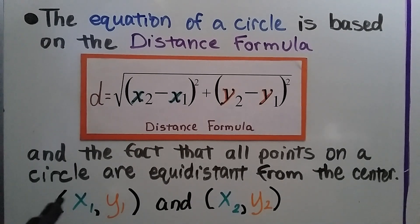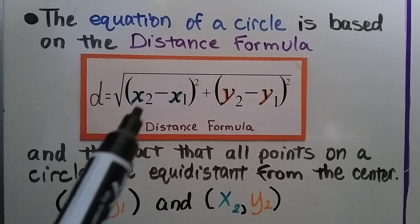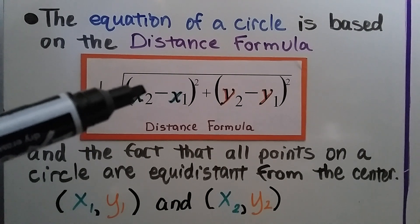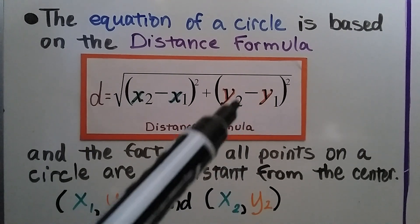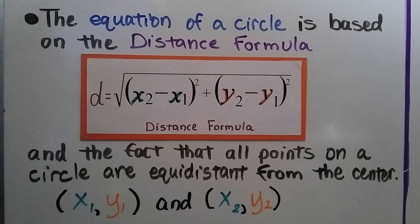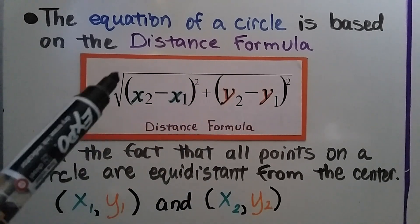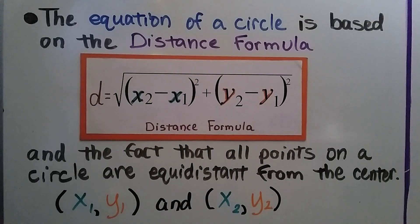So for our ordered pairs x sub 1 and y sub 1 and x sub 2 and y sub 2, we just subtract the first x value from the second one and the first y value from the second y value. And that'll tell us the distance between two points if we find the square of this one and the square of this one, add them together and square that.